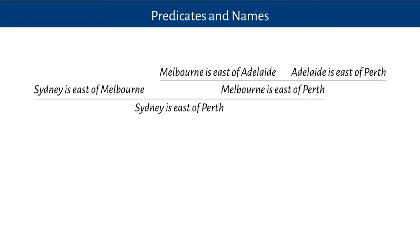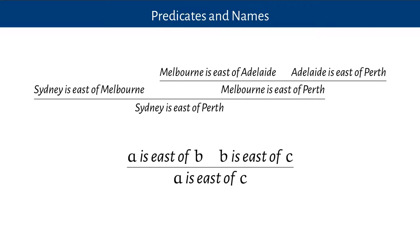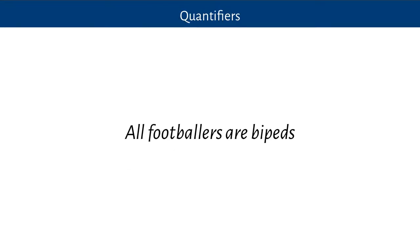This reasoning uses the principle that if A is east of B and B is east of C, then A is east of C. You can see that the same principle — that same general shape — just involves the predicate 'is east of' and the names Sydney, Melbourne, Adelaide, Perth. We're going to look in this section at general principles involving predicates, names, quantifiers and other logical concepts, and how they feature in reasoning, in terms of tree structures which represent reasoning.